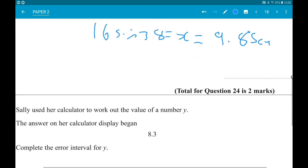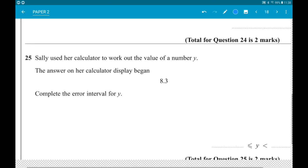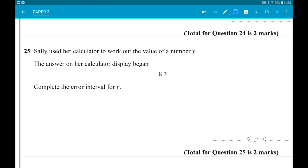Number 25: We have error intervals. Sally used her calculator to work out a number Y. The answer began 8.3. Complete the error interval for Y. The lower bound is the smallest possible number Y could be. The number might be 8.3, so 8.3 is our lower bound. The upper bound is the smallest number Y cannot be. That would be 8.4.